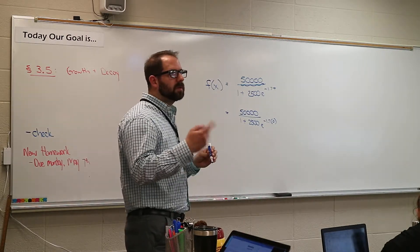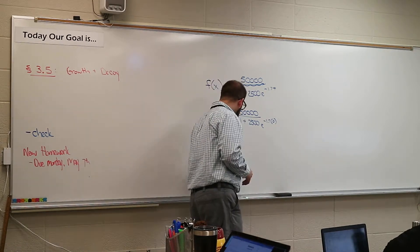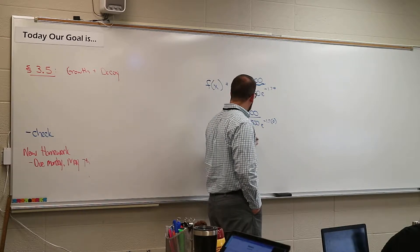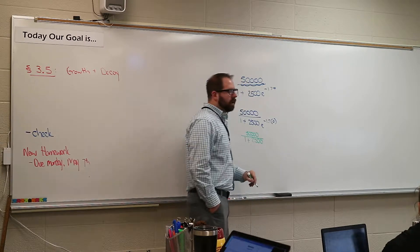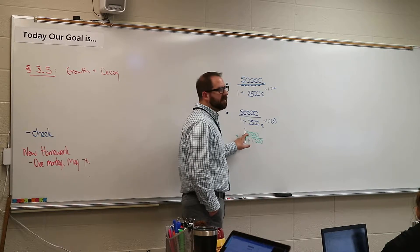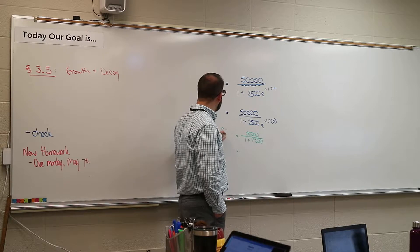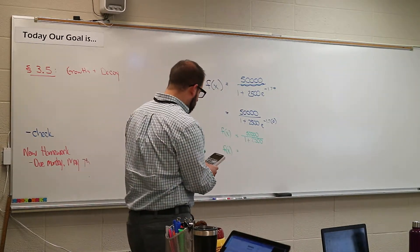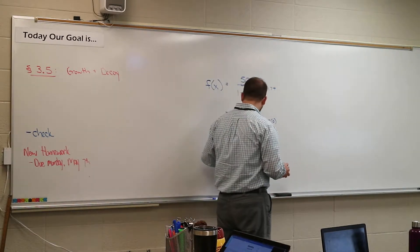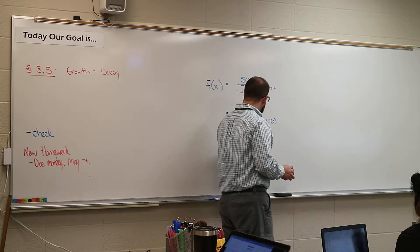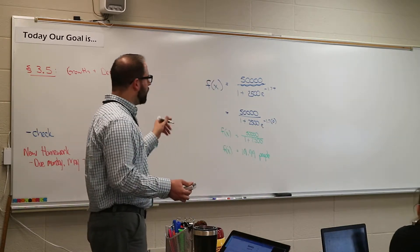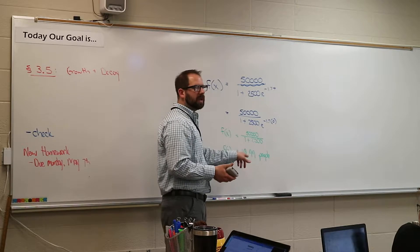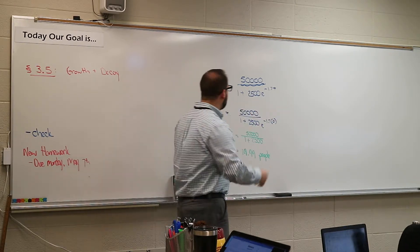Why do you plug zero into t? Because t equals zero represents week zero. Anything to the zero power is 1, so on the bottom you get 1 plus 2500 equals 2501. Then take 50,000 divided by 2501, which gives about 19.9 — so roughly 20 people. That's the initial infected count; those are your patient zeros, the people that started it at time zero.